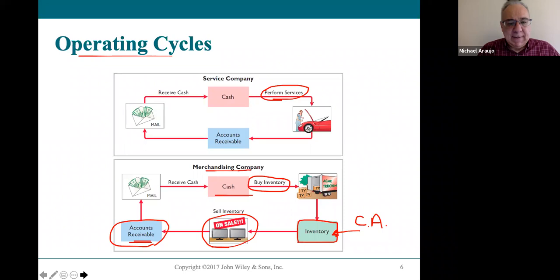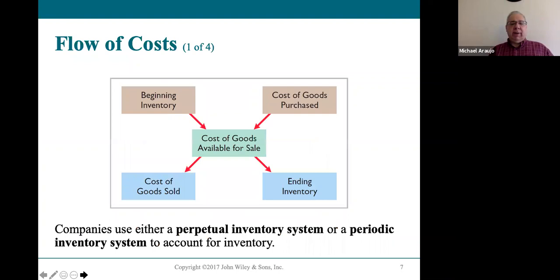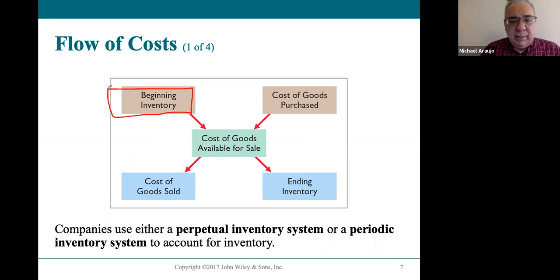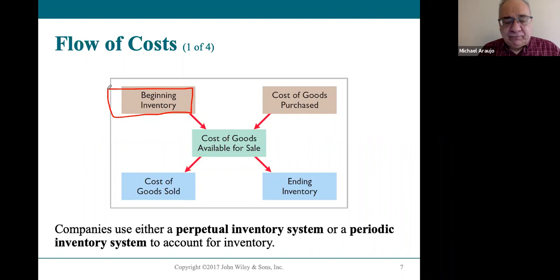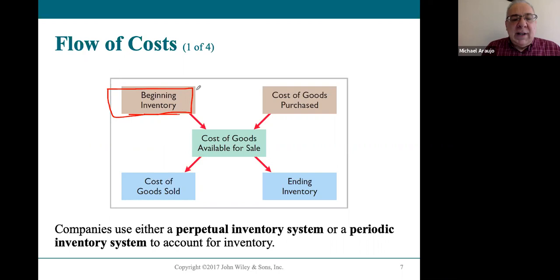For those who've worked in retail, this should make perfect sense. Everything starts with beginning inventory—the ending inventory on the balance sheet for December 31st, 2020 is the beginning inventory on the balance sheet for January 1st, 2021. There's already so much inventory in the store. From there, the company buys more goods—companies are always buying more inventory to put on their shelves, and that's a cost to the company.